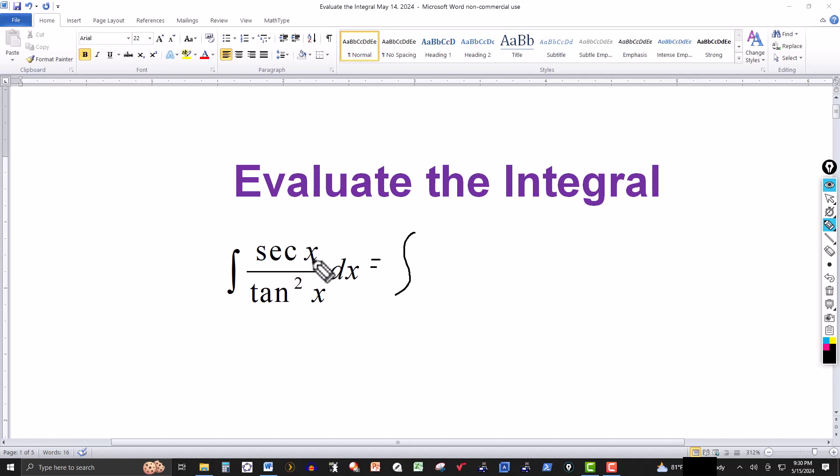So I'm going to look at secant of x here, the same thing as 1 over cosine, they're reciprocals. So I could rewrite the secant of x as 1 over cosine.